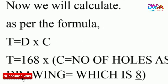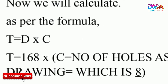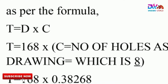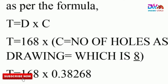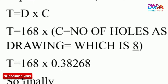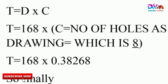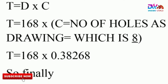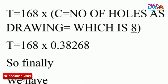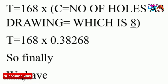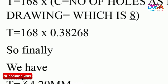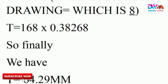We calculate using the formula T = D × C. T = 168mm × C. The number of holes as per the drawing is 8, so the constant value C = 0.38268 for 8 holes. Therefore T = 168mm × 0.38268 = 64.29mm.